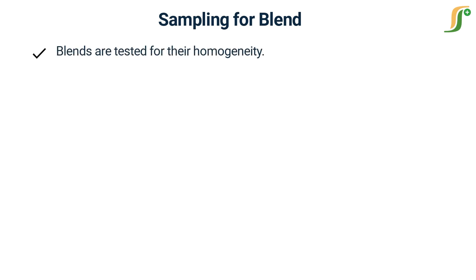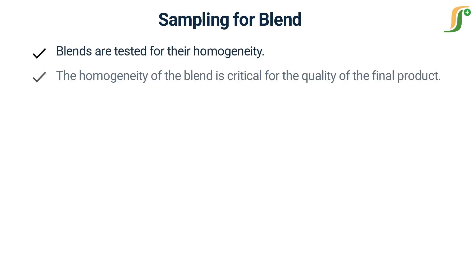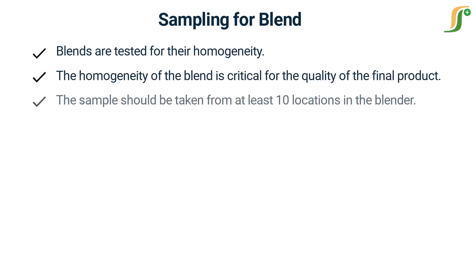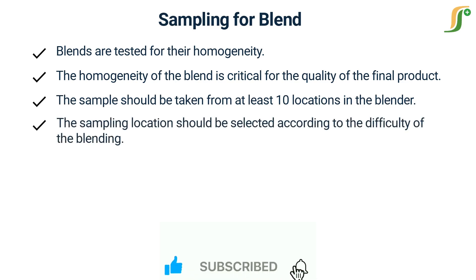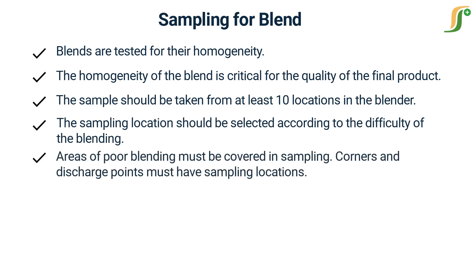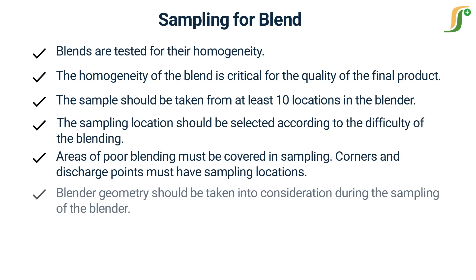Blends are tested for their homogeneity. The homogeneity of the blend is critical for the quality of the final product. The sample should be taken from at least 10 locations in the blender. The sampling location should be selected according to the difficulty of blending. Areas of poor blending must be covered in sampling; corners and discharge points must have sampling locations. Blender geometry should be taken into consideration during sampling.